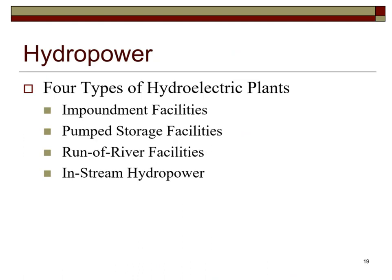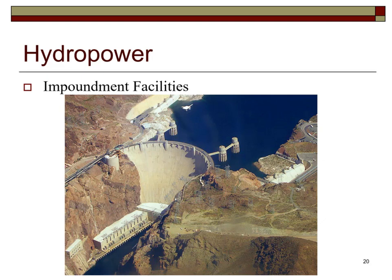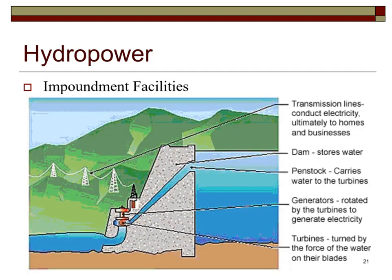There are four types of hydroelectric facilities: impoundment facilities, pumped storage facilities, run-of-river facilities, and in-stream hydropower. Hoover Dam is an impoundment facility, and this slide lists the major components of an impoundment facility.